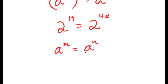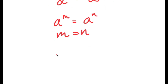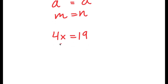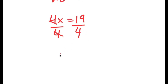Now if I have a to the power of m is equal to a to the power of n, this means that m is equal to n. So in this case, 19 is equal to 4x. Now we have a simple equation — all I have to do is divide both sides by 4, and I get x is equal to 19 over 4.